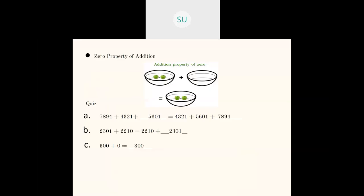Then there is the zero property of addition: whenever you add zero to any number your final answer will be the number itself. There is also the adding one property: whenever you add one to a number you get the successor of that number. For example, 689 plus one gives 690, which is the successor of 689. So this covers what you studied, including number stories and shortcut methods for addition.